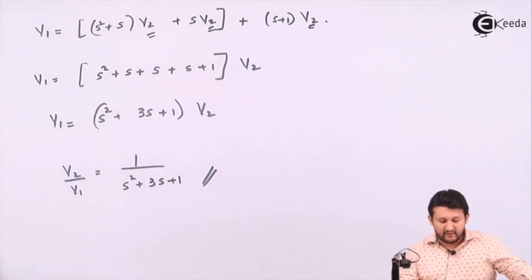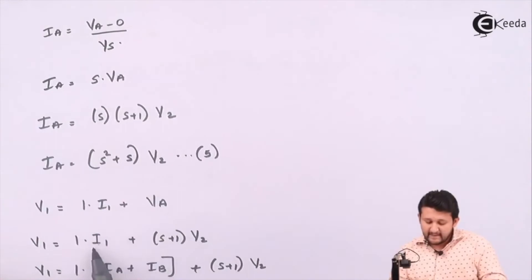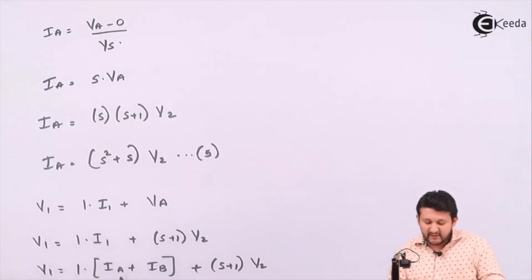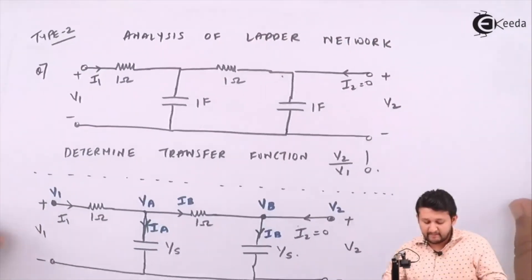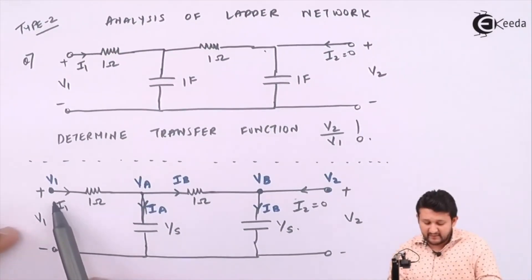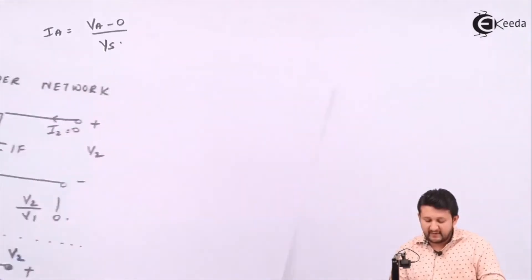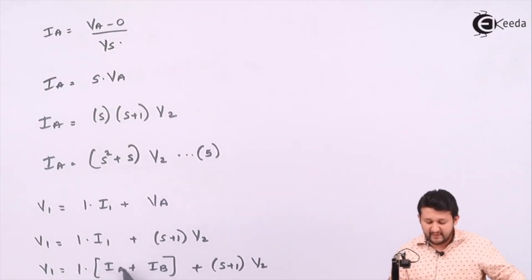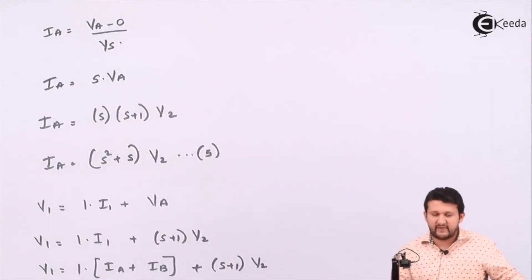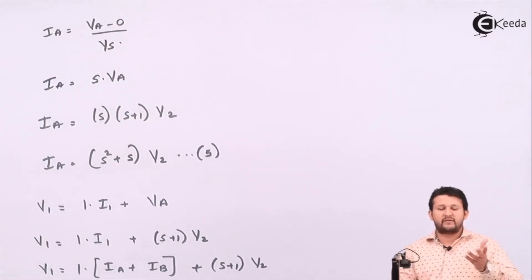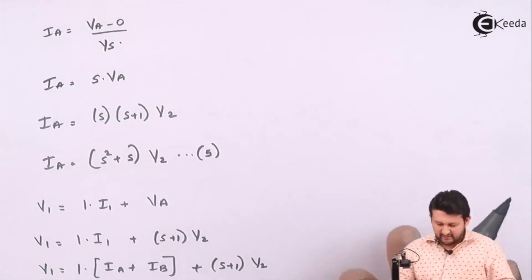One important point: why did we write I1 as Ia plus Ib? The reason is that I1 current splits into two currents — Ia and Ib. That's why I1 equals Ia plus Ib. With the values of Ia and Ib already calculated, we simplified the equation. The final equation must be in terms of V2 because the question asks to determine V2 by V1. That's it — thank you so much.